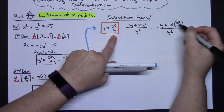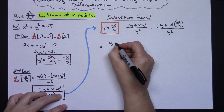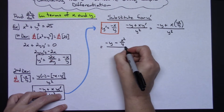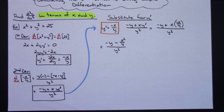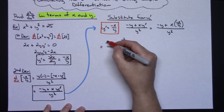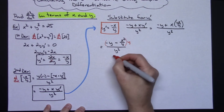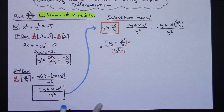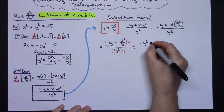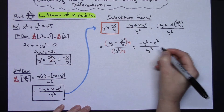Let's clean that up: negative y minus x² over y, all over y². I want to multiply through by the least common denominator to get rid of the complex fraction. The LCD is y, so I'm going to multiply by y on top and bottom. That simplifies down to negative y² minus x² in the numerator, with y³ on the bottom.